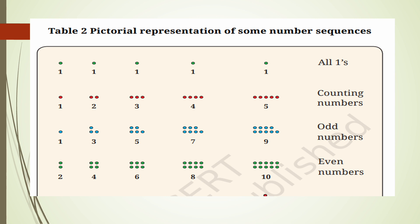These number sequences we have already seen, and their pictorial representation is shown here. All 1s — represented with 1 dot each. Next, counting numbers: 1, 2, 3, 4, 5. For each number, the corresponding number of dots is used — 1 dot for 1, 2 dots for 2, 3 dots for 3, 4 dots for 4, and 5 dots for 5.